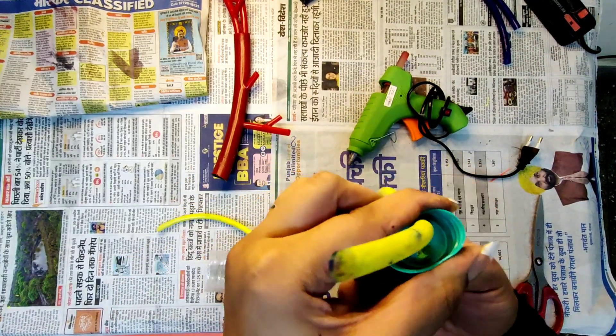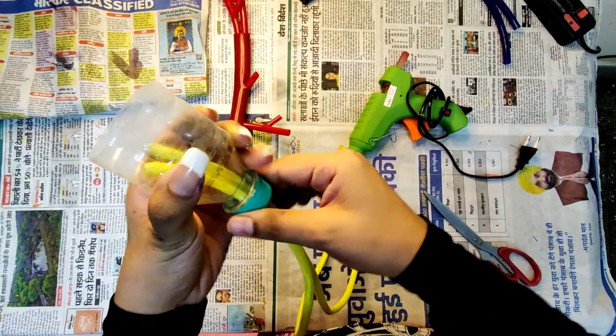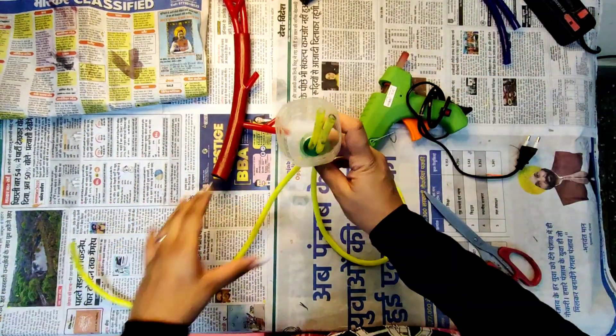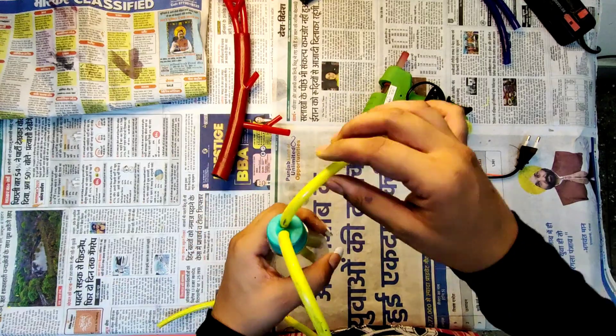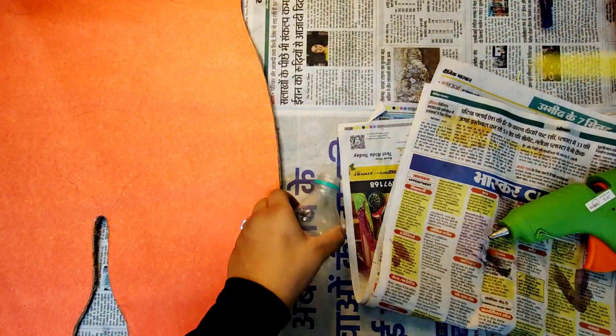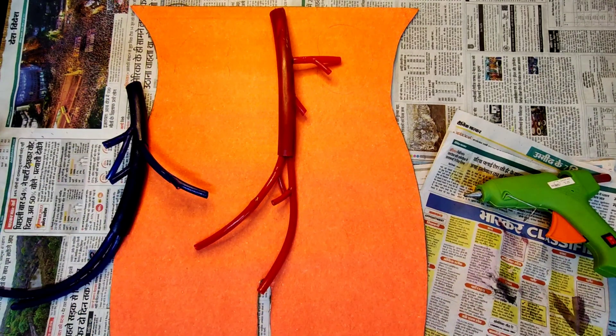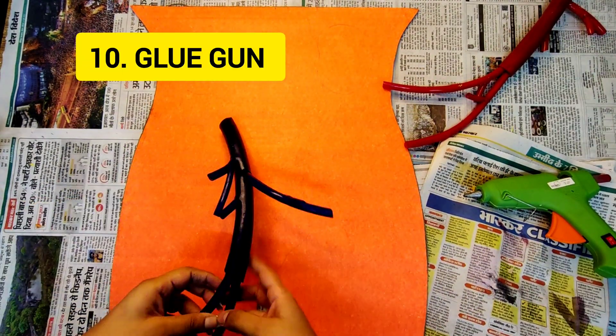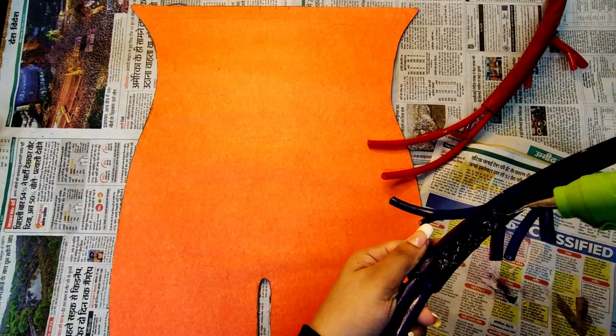After inserting the ureters inside the hole, we'll close the lid of the bottle and then attach the ureters inside the bottle with the help of tissue tape. Now it's time to stick the renal arteries and veins. We'll use a glue gun for that. First I'll be sticking the renal vein and then the renal artery.